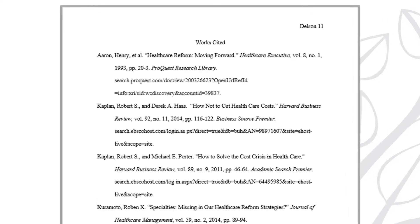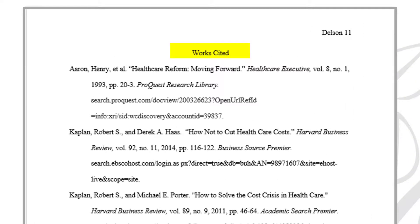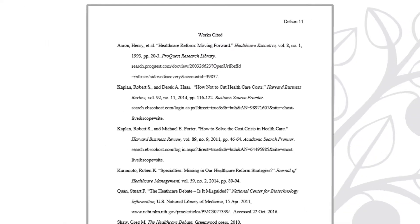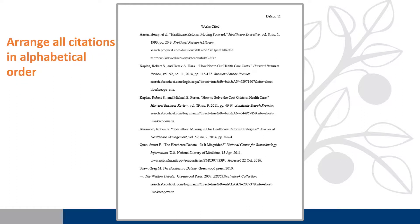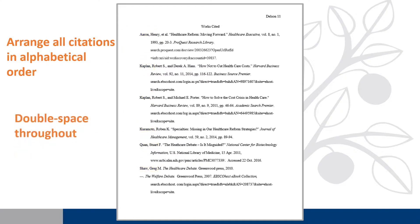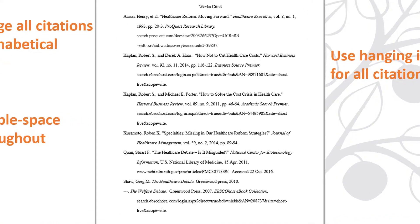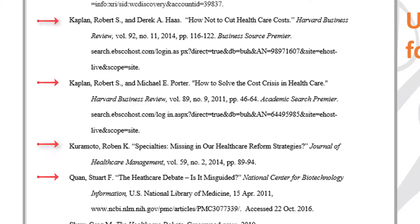To format your Works Cited page: title the page Works Cited in the center, arrange all your MLA citations in alphabetical order by the first word of each entry, double space throughout the entire paper, and use hanging indent for each citation. Hanging indent means the first line of each MLA citation sticks out on the left, and the subsequent lines of the citation are indented five spaces to the right.